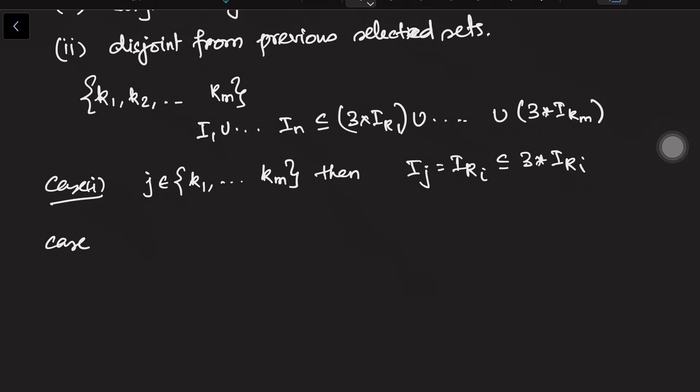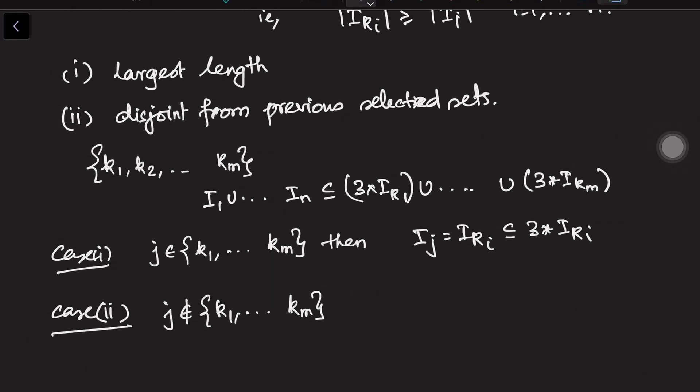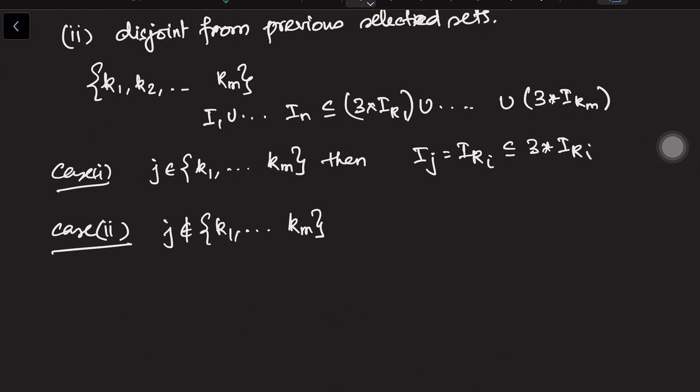Then second case is suppose j is not in this set. j has not been selected at these stages and the process also terminated. So what we can conclude is that since we have not selected j, what could be the reason is that there are two reasons: either it may not be the largest one or it may not be disjoint from the previous selected sets. If i_j were disjoint from all these things then we should have chosen that.